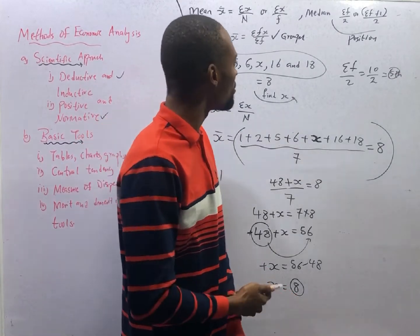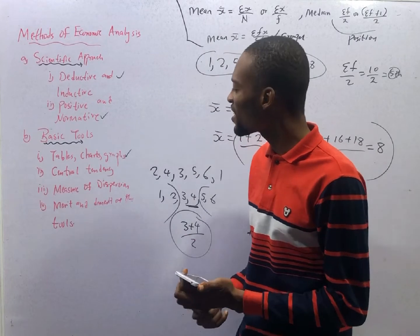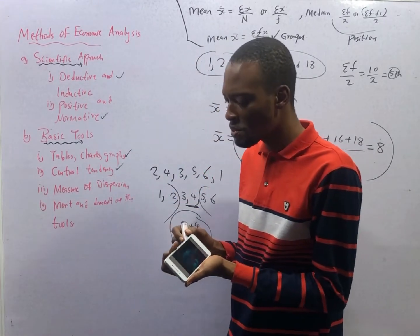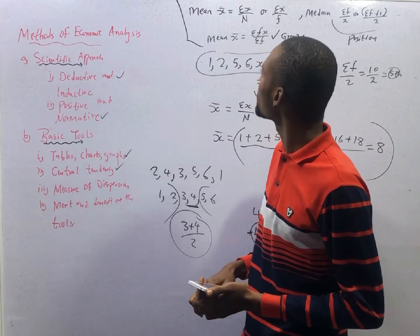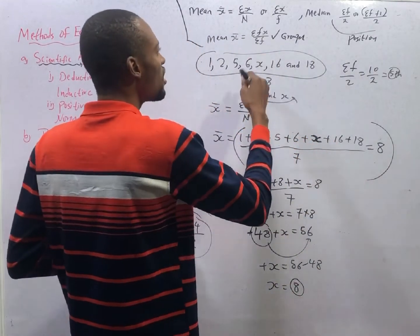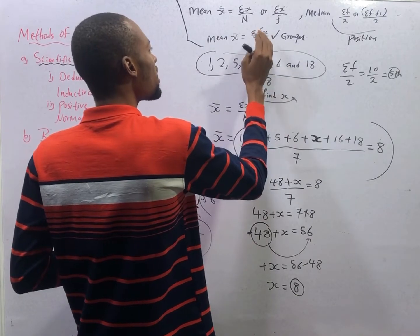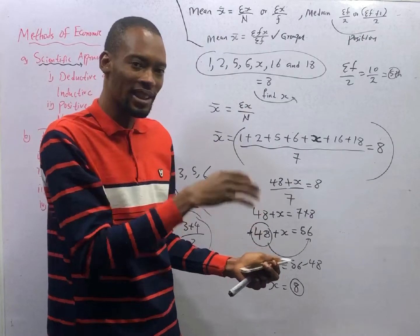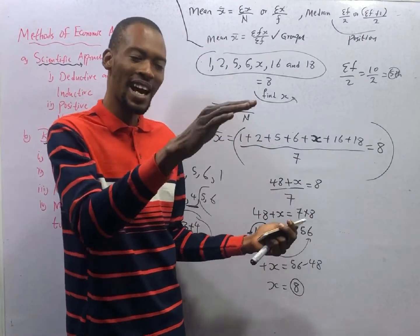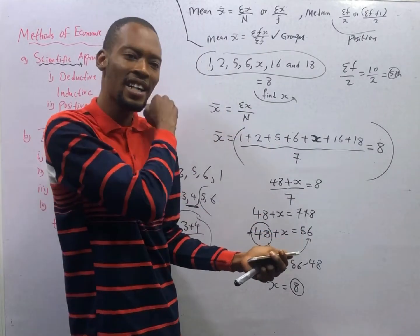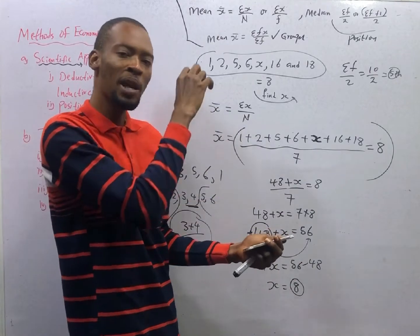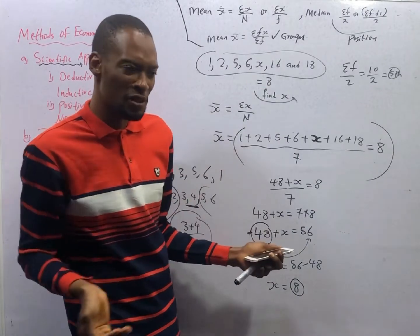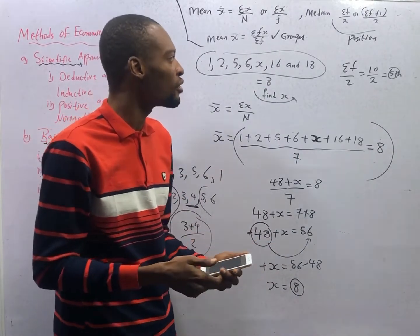This brings us to the end of central tendency: mean, median, and mode. Mean is summation x over n for ungrouped data. For grouped data, it is summation of fx over f. When you have a table for grouped data, multiply values by their frequencies, add everything up, then add all the frequencies, and divide the product sum by the total frequency — that is your mean for grouped data.